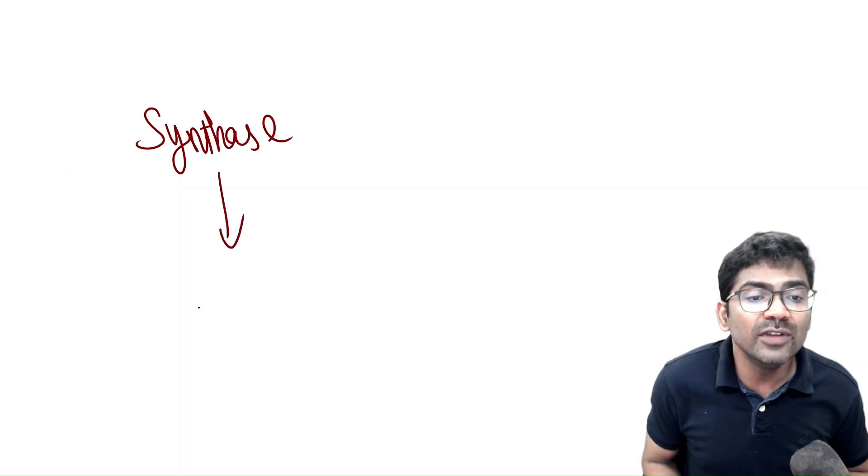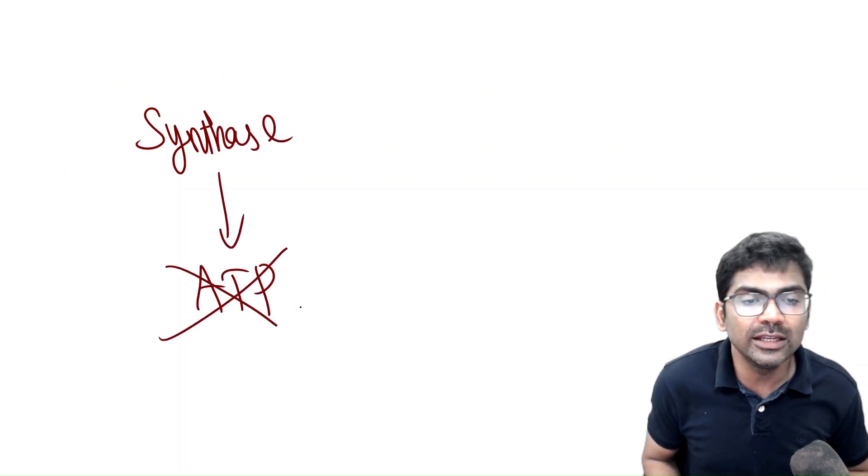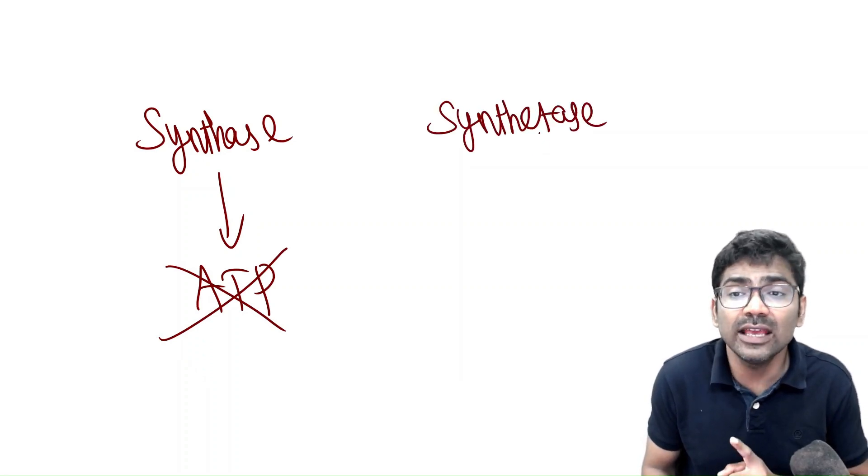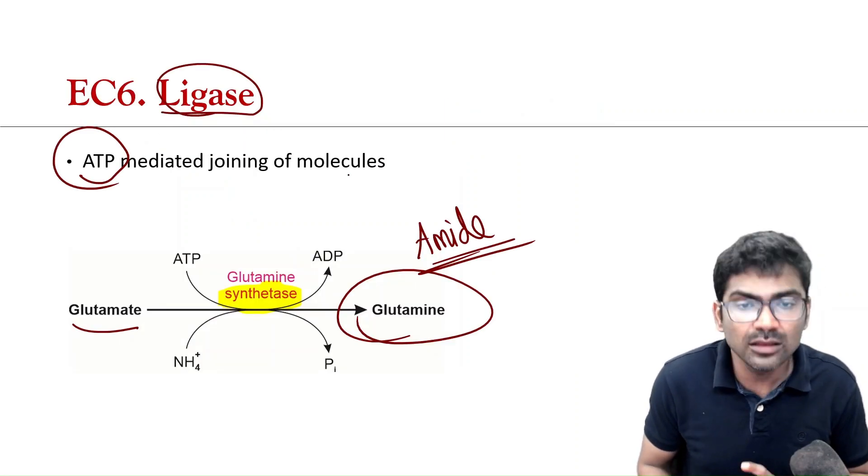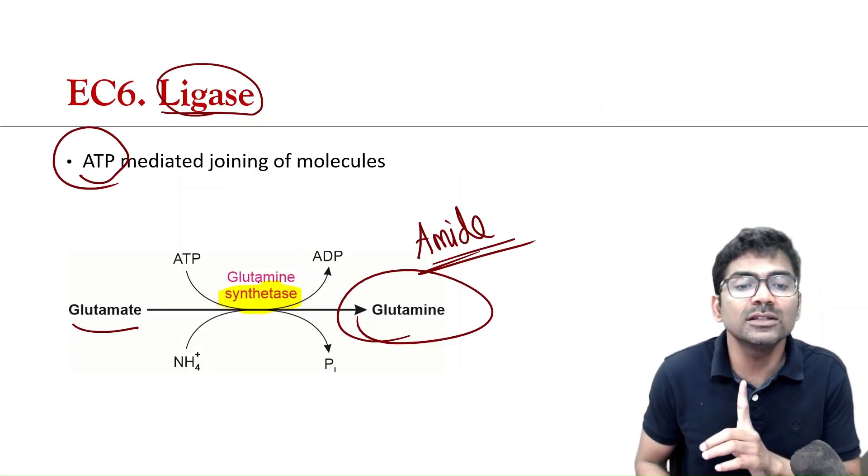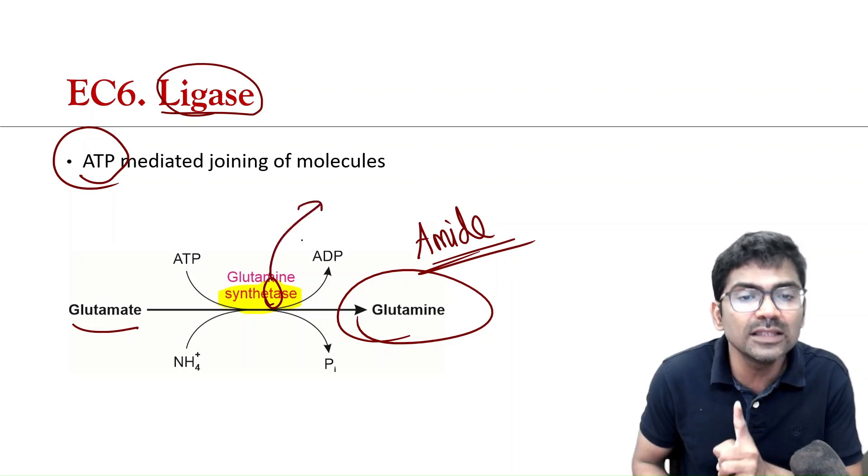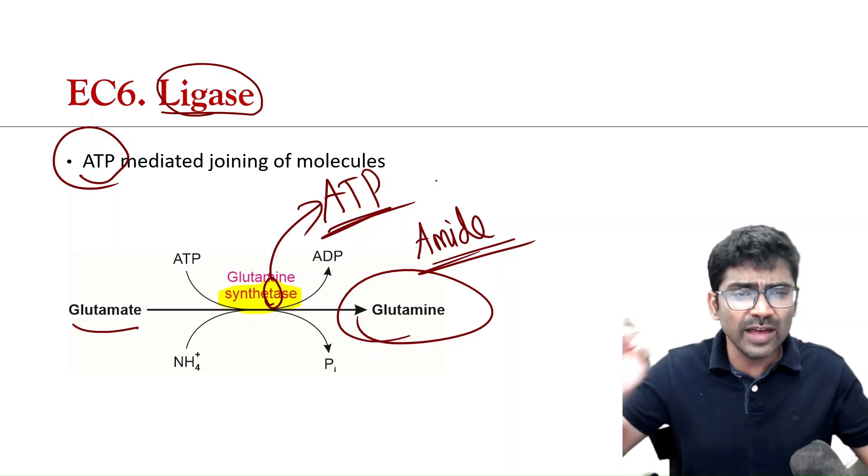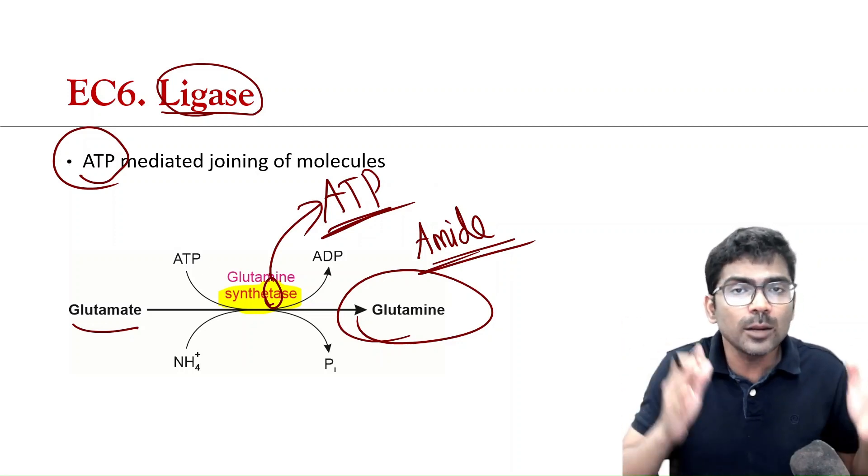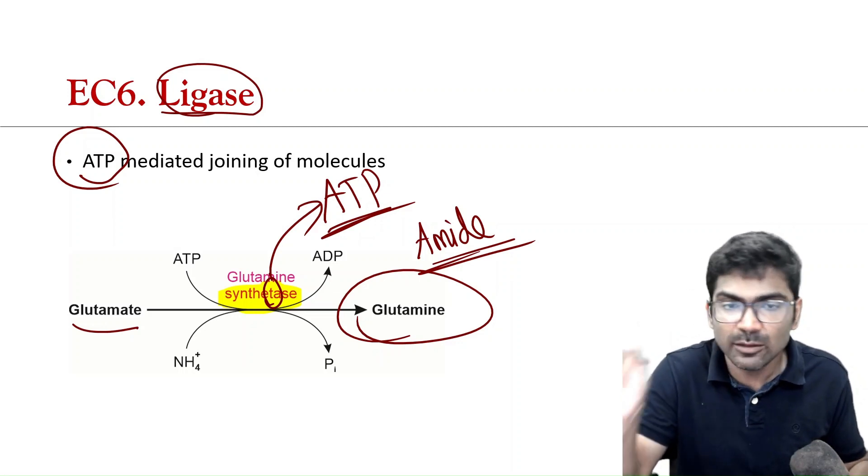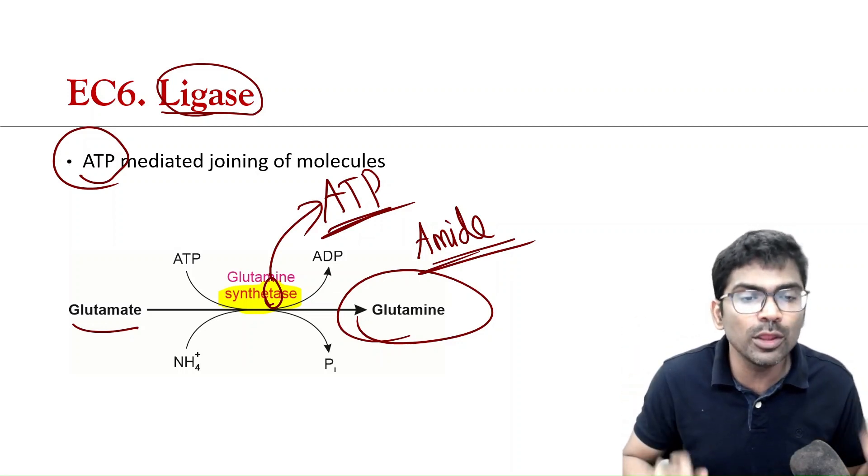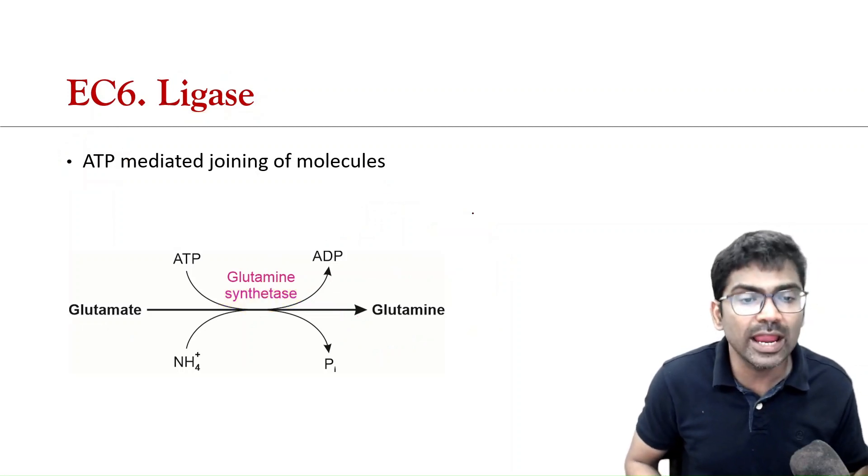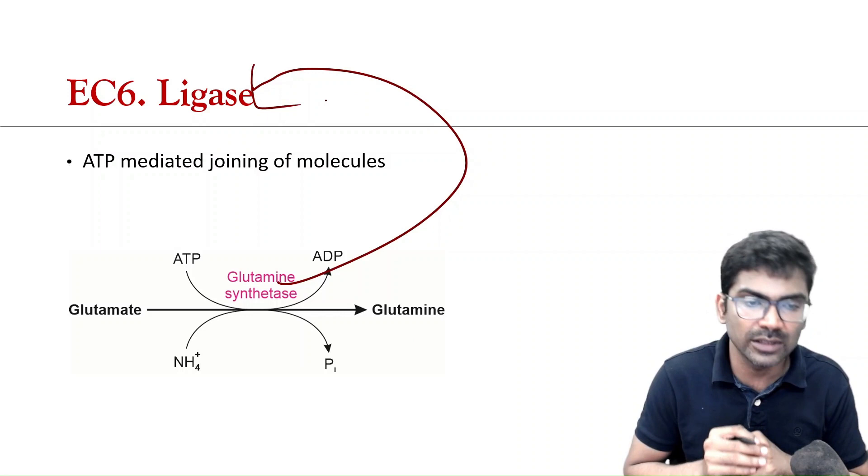So, synthase will not use ATP. So, whenever you see the name synthetase, this T is very, very important. So, synthetase means it is going to use ATP. So, T in synthetase, remember it is ATP. So, wherever you see the name synthetase, carbamoyl phosphate synthetase, that means that enzyme is going to use ATP. So, all synthetases, they belong to the category of ligase.